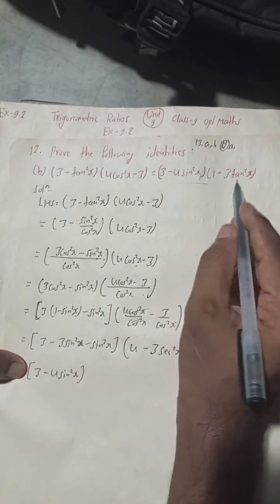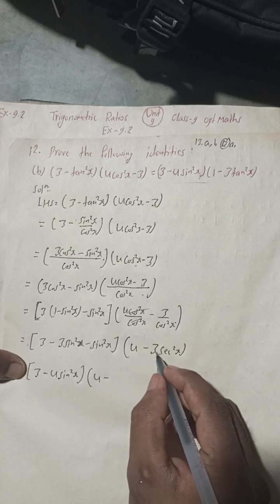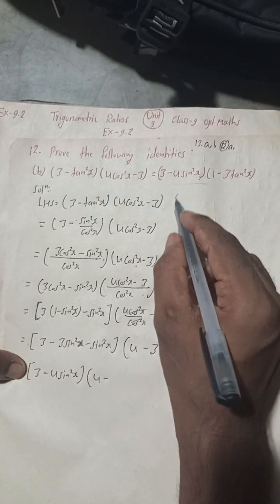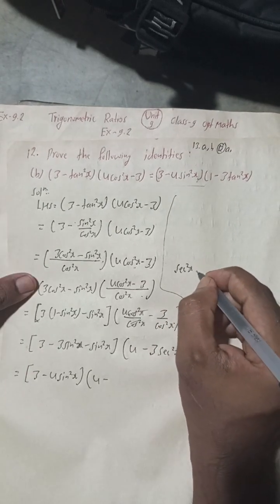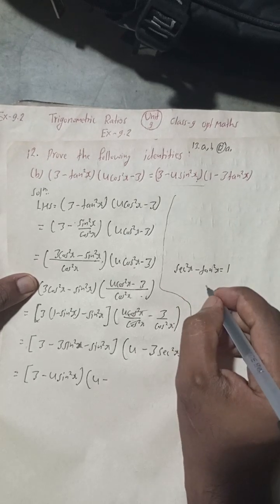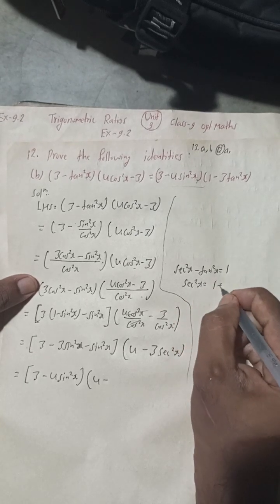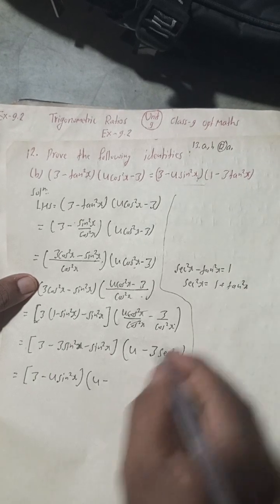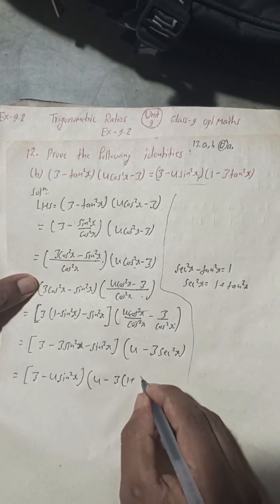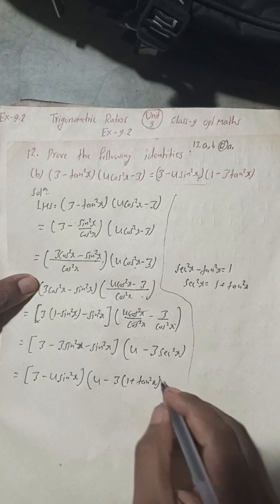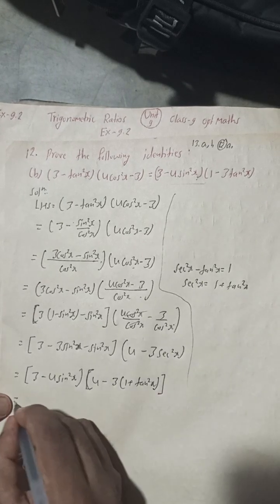Now for the remaining part we need to convert into tan square form. We apply the identity sec²x = 1 + tan²x. So we write 3 as it is, and substitute sec²x as (1 + tan²x) inside the bracket.